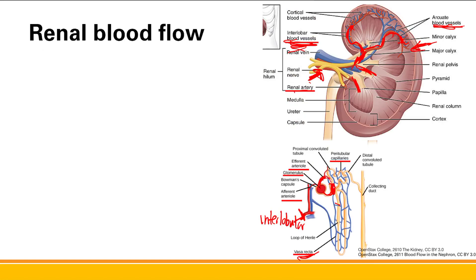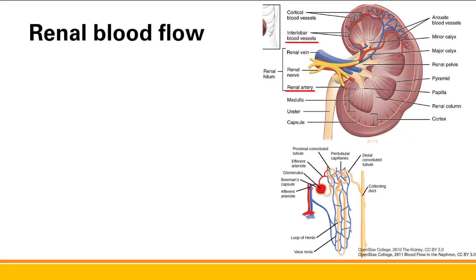Let's review the renal blood flow sequence: renal artery → segmental arteries → interlobar arteries → arcuate blood vessels → interlobular arteries → afferent arteriole → glomerulus → either into tubules or into the efferent arteriole → peritubular capillaries/vasa recta → venous outflow. That's the complete renal blood flow and anatomy.